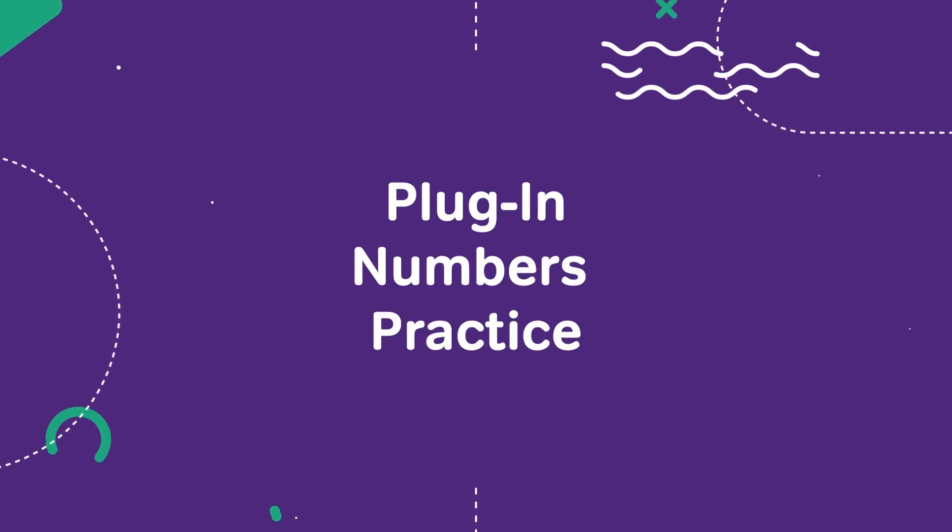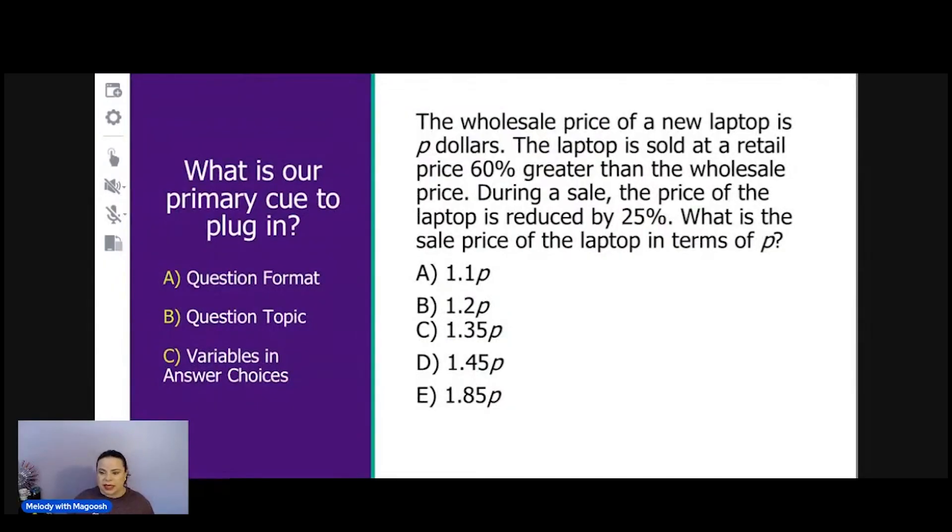Grab your scratch paper and follow along with me. The wholesale price of a new laptop is P dollars. The laptop is sold at a retail price 60% greater than the wholesale price. During a sale, the price of the laptop is reduced by 25%. What is the sale price of the laptop in terms of P?